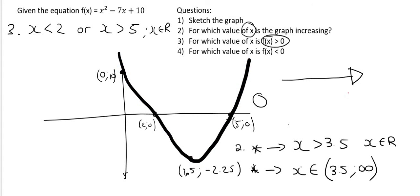Now we can move on to number four where they say for which value of x is the graph negative. So that means below the x-axis so that's over here.